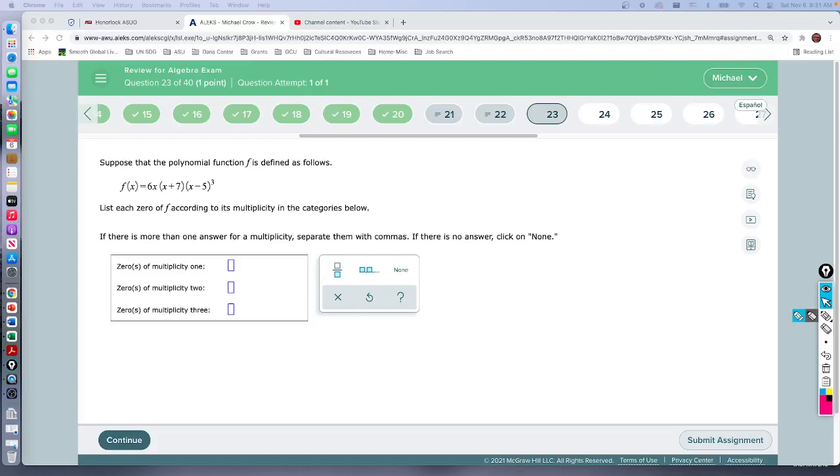Question 23 here, so we're given a polynomial function and here it is. Each zero is where the function itself is equal to zero, and according to its multiplicity in the categories. So we look at these three numbers being multiplied and we're looking for the zeros—where does it equal zero?